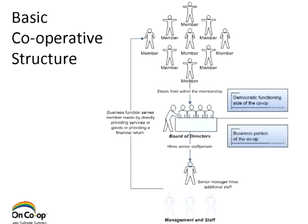This is the diagram we looked at last week — your basic cooperative structure. Your basic co-op structure, with some exceptions I'll go through in a minute, is that you have your membership, which is responsible for electing the board of directors from within itself. In Ontario, the board of directors can only be made up of members of the cooperative — you can't have any outside directors. Along with other democratic voting motions, this is considered the democratic functioning side of the cooperative.